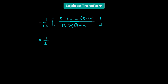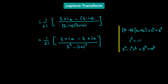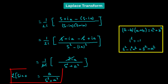So that gives us 1 over 2i, multiplied by: in the numerator we have s plus ia minus s plus ia, divided by s squared minus ia squared. We have used the identity that the product of a minus b and a plus b gives a squared minus b squared. Since i squared equals negative 1, s squared minus i squared a squared becomes s squared plus a squared. The s terms in the numerator cancel, leaving 2ia in the numerator. So we get 1 over 2i times 2ia divided by s squared plus a squared, which finally gives us a divided by s squared plus a squared. Thus, the Laplace transform of sin at equals a divided by s squared plus a squared.